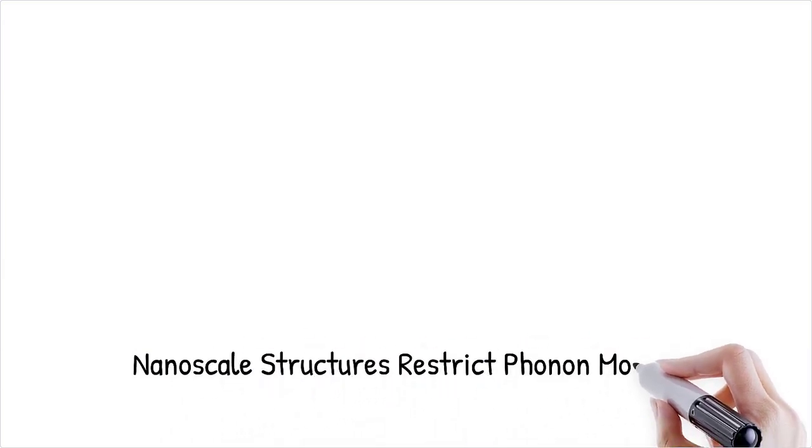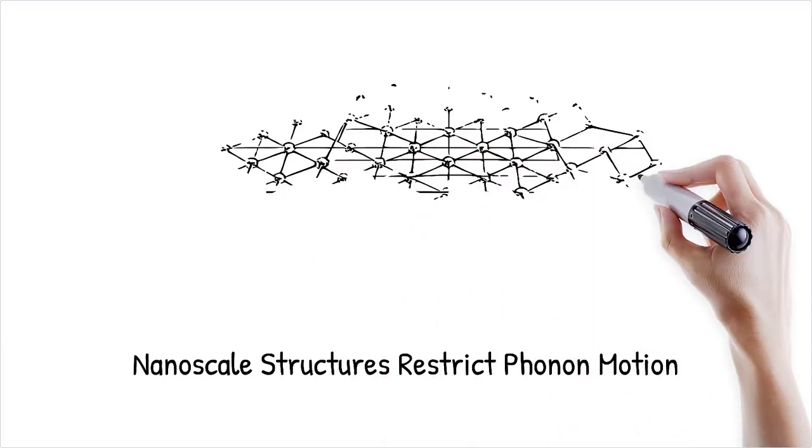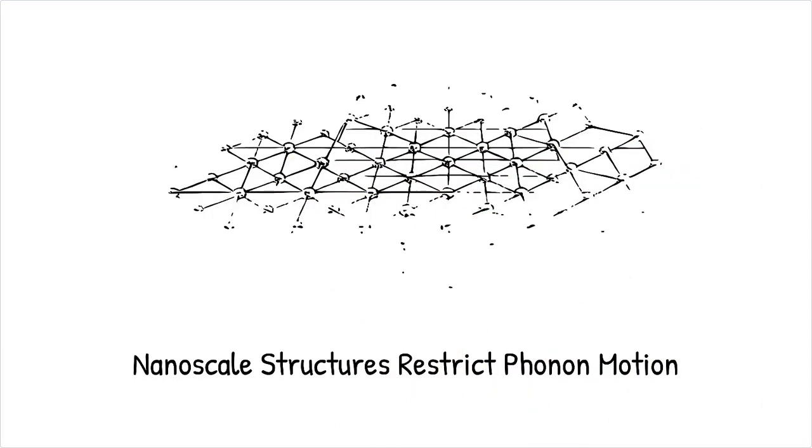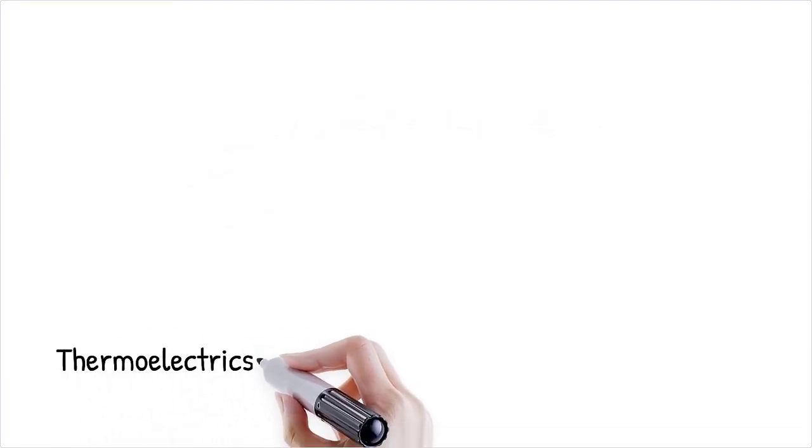However, in nanostructured materials such as superlattices, nanowires, or nanoporous films, phonon motion becomes confined and scattered. Importantly, the electronic properties may remain largely unaffected, making such materials ideal for thermoelectrics.